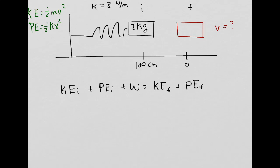What is the initial kinetic energy when the spring is compressed? When it's there, it's not moving — its velocity is zero — so kinetic energy, which is one half mv squared, is going to be zero. The initial potential energy is one half k times x squared — that's one half times 3 times 1 squared (converting 100 centimeters to 1 meter). Work is zero because there are no external forces like friction or an external push.